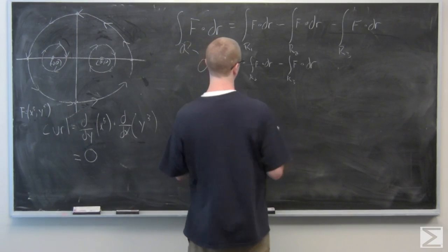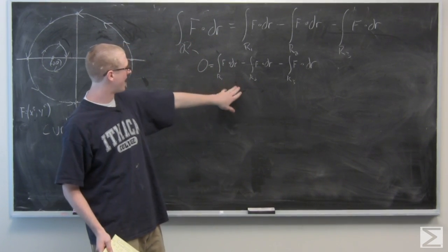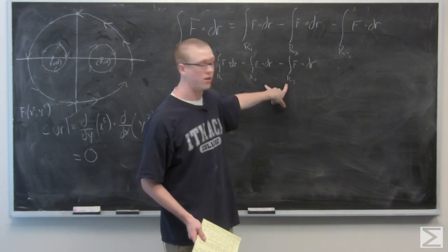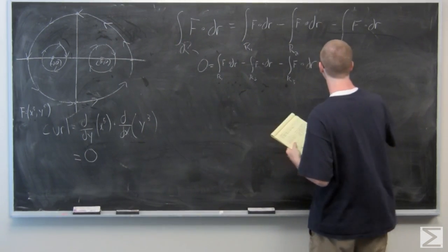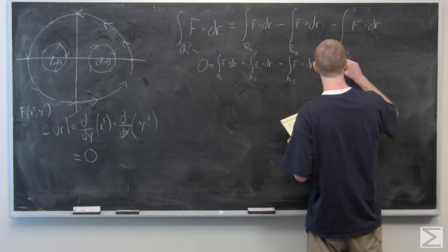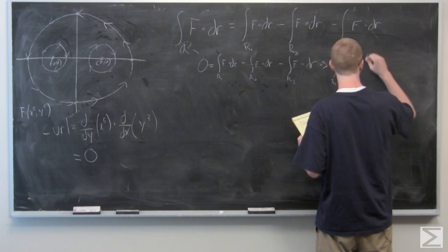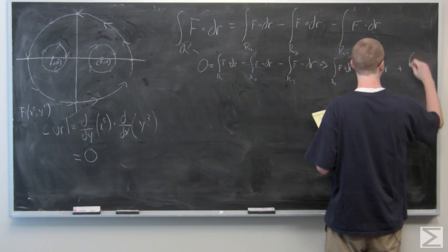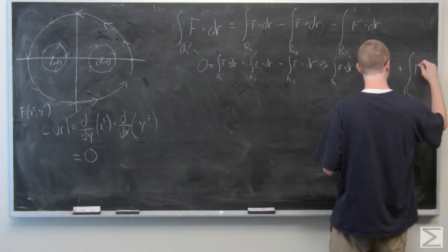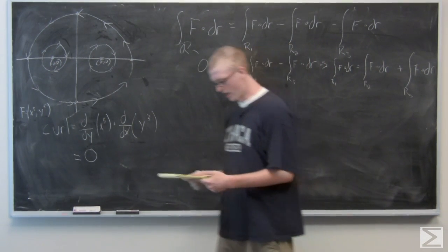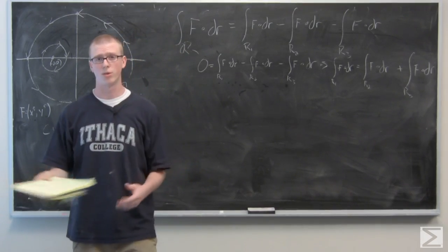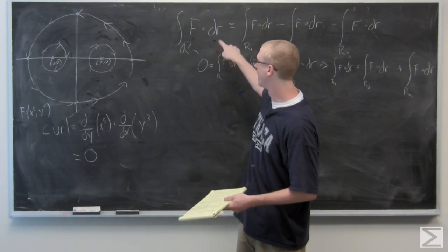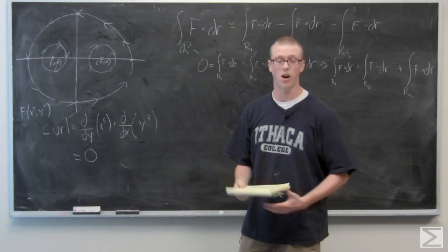Now that we've found this integral equals zero, we can see that the integral of f dot dr over R1, the outside circle, is equal to the integrals over the other two regions combined. We need to parameterize the circles to evaluate these integrals for f and r, so we need to figure out exactly what r is going to be.